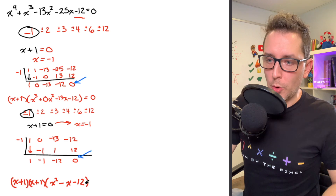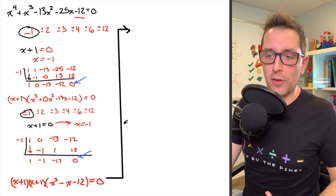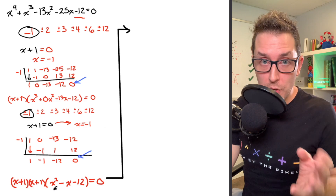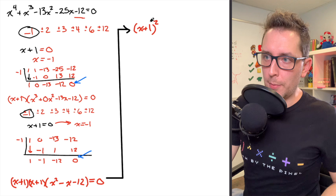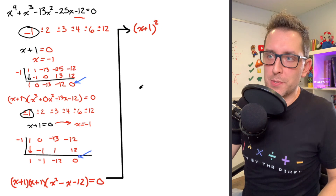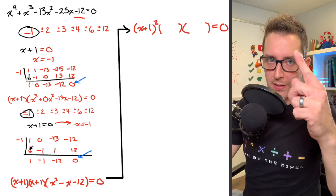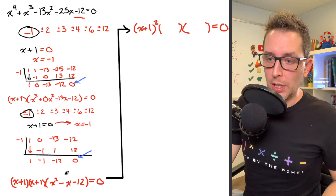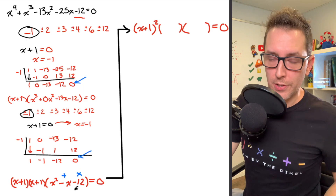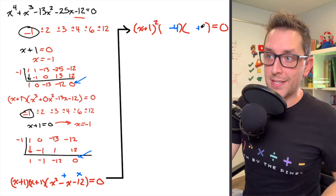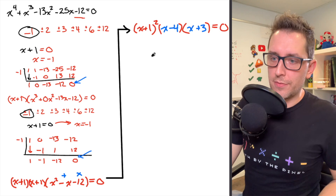We end up with a nice quadratic trinomial, and I set the whole thing equal to 0. We've got a product of two binomials and a quadratic trinomial, which is now quite manageable. I'll write the two x plus 1 binomials as x plus 1 squared. Our last step is to factor that trinomial — we need two numbers that add to get the coefficient on our x term, which is negative 1, while also multiplying to get negative 12. Negative 4 and 3 satisfy those conditions, so the factored form of the trinomial is x minus 4 times x plus 3.